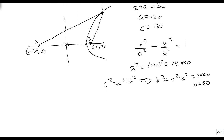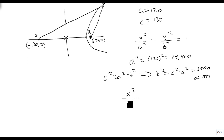So my equation then, all I have to do is replace the a and the b. We get x² over 14,400 minus y² over 2,500 is equal to 1.